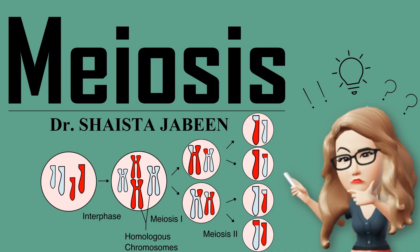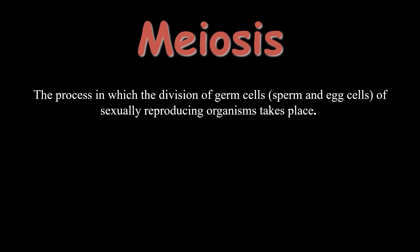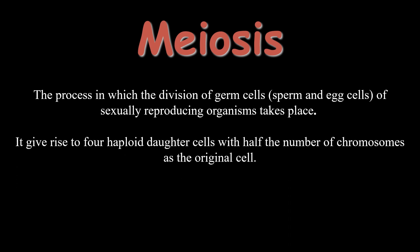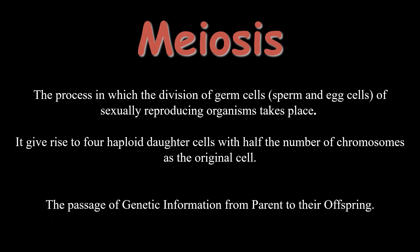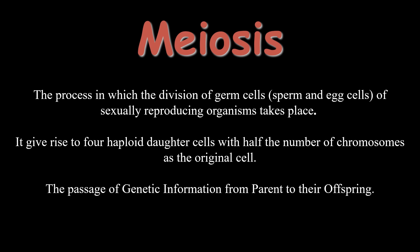Let us learn about meiosis. Meiosis is the process in which the division of cells takes place — specifically the division of special type of cells known as germ cells. At the end of meiosis, there is the production of four daughter cells that are haploid cells, which means they contain half the number of chromosomes compared to their parent cells. In this process, the transfer of genetic information from parent to offspring takes place.